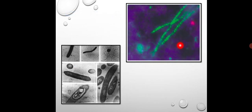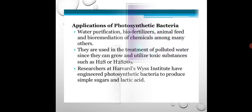This is the example of phototrophic acidobacteria and this is the example of heliobacteria. These are certain examples of anoxygenic photosynthetic bacteria.